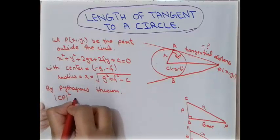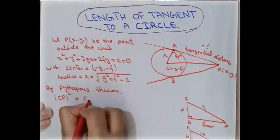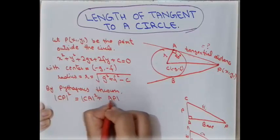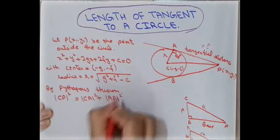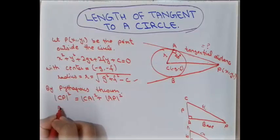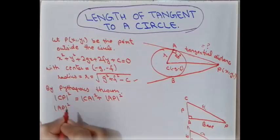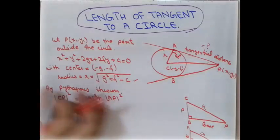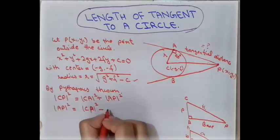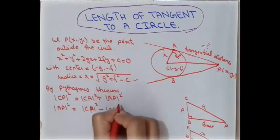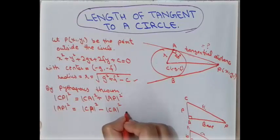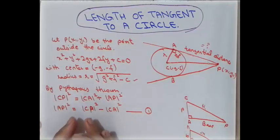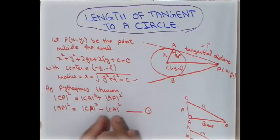So: CP² = CA² + AP², which gives us AP² = CP² − CA². We treat this as our first equation, and now we need to find the values of CP and CA to substitute into it.